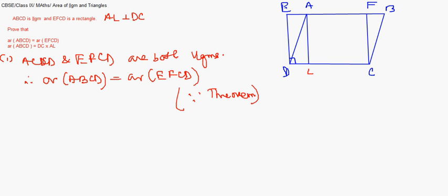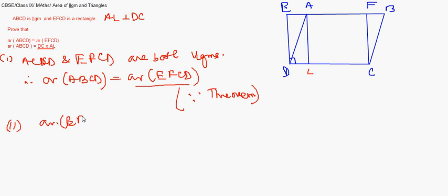For the second part: area ABCD is equal to area EFCD, which is a rectangle. Area of rectangle EFCD equals length times breadth, which is DC times FC.